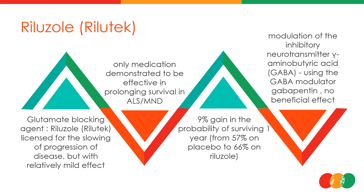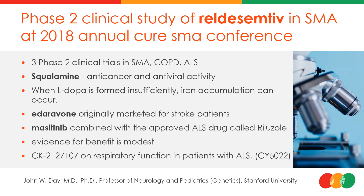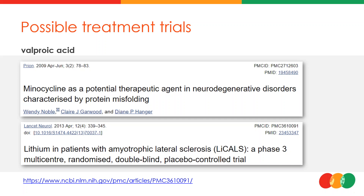The idea is to modulate the inhibitory neurotransmitter GABA using GABA modulators such as gabapentin. Other phase 2 trials include squalamine — an anti-cancer and antiviral agent — and edaravone, originally marketed for stroke patients. Masitinib is being combined with approved ALS drug Riluzole as combination therapy. CK2127107 targets respiratory function for ALS patients. Low-dose lithium, well known for mental health use, is currently in a phase 3 trial for ALS patients.